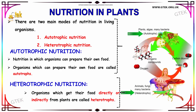Heterotrophic nutrition involves organisms which get their food directly or indirectly from plants — these are called heterotrophs. Heterotrophs get their food directly or indirectly from plants, animals, and fungi — these are all heterotrophs.